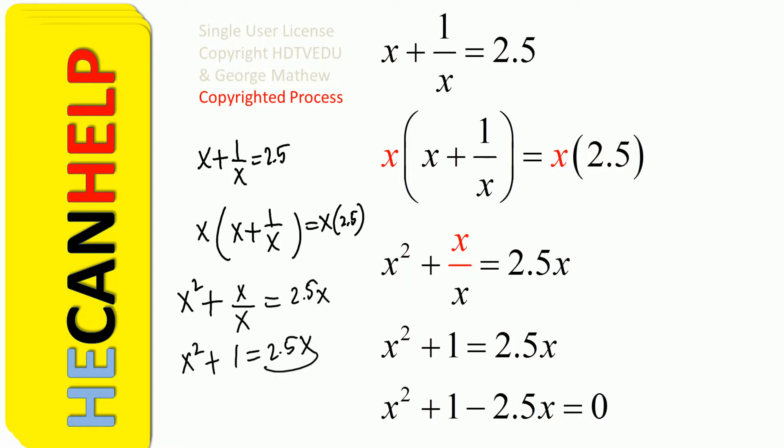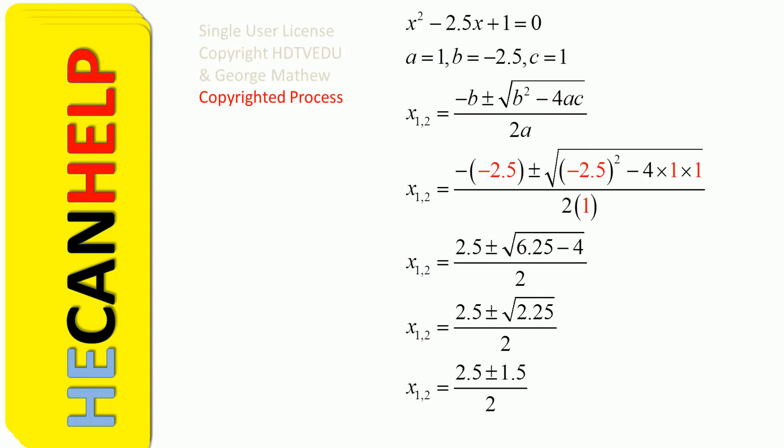Take 2.5x to the left side and you get x squared plus 1 minus 2.5x is equal to 0. Now we can rearrange this as x squared minus 2.5x plus 1 is equal to 0, and that is a quadratic equation. We rearrange and get x squared minus 2.5x plus 1 equals 0.